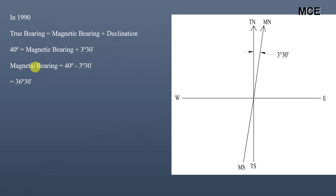Remember: the true bearing of a line remains constant and does not change, but the magnetic bearing changes with the declination. To solve these types of questions, draw a rough sketch showing the true north and the magnetic north, and then find the bearings.